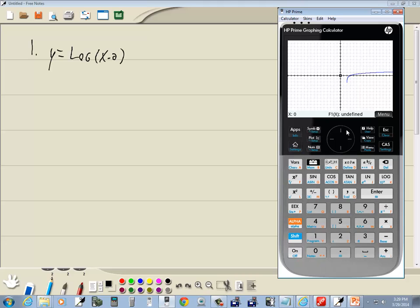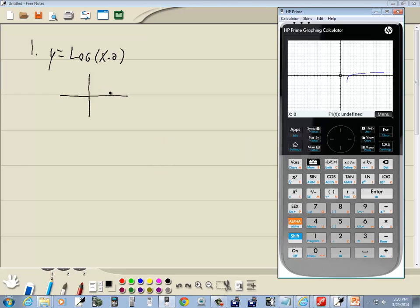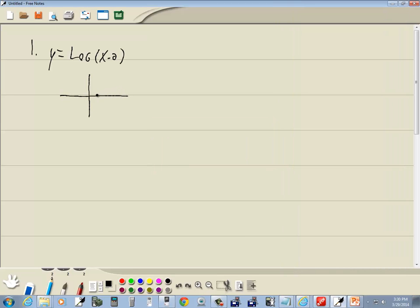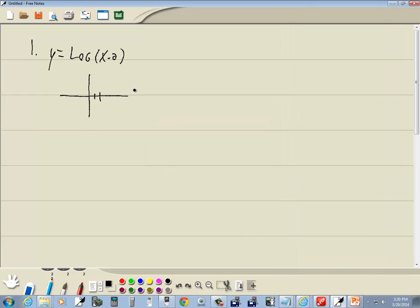And then if I press plot, it'll almost give us our graph. I cannot figure out why these graphing calculators cannot graph logs. I suppose there's some kind of mathematical reason. But the graph looks like something like this. These graphs never just stop.